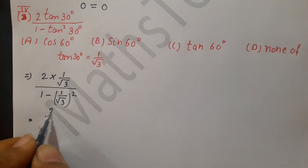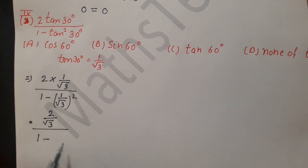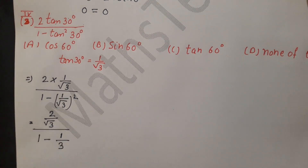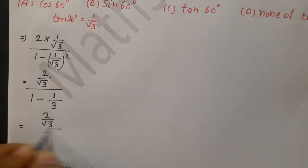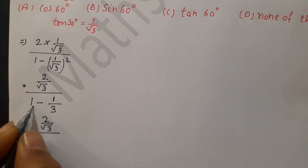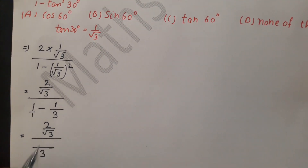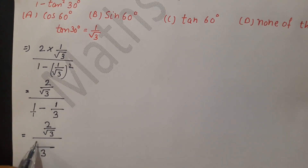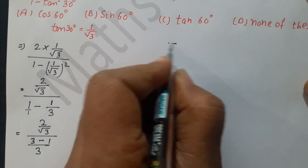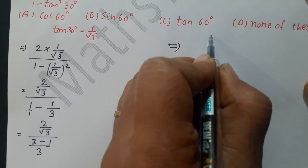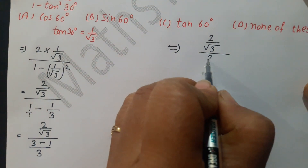Now solving: numerator is 2 × (1/√3) = 2/√3. Denominator is 1 - (1/√3)² = 1 - 1/3. Taking LCM of 3 in the denominator: we get (3 - 1)/3 = 2/3. So the expression becomes (2/√3) ÷ (2/3).